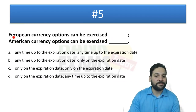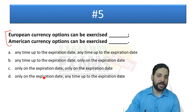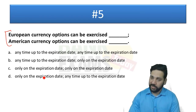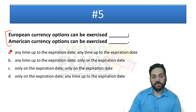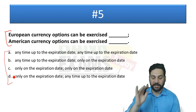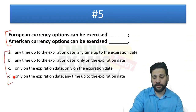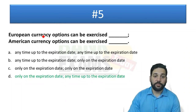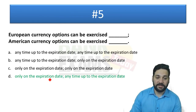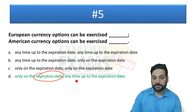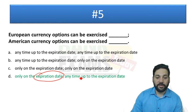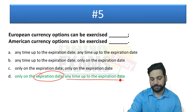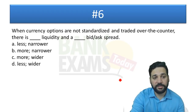Question 5: The European currency option and the American currency option. The European currency option can only be exercised on the expiration date, while the American currency option can be exercised anytime up to the expiration date. Simple distinction — let's move to question 6.